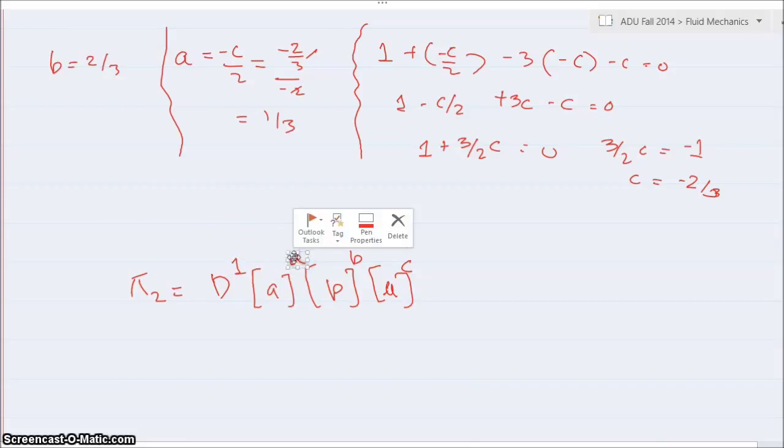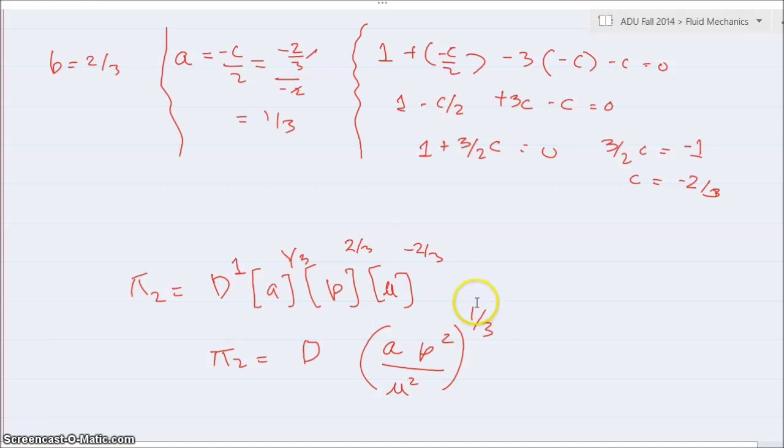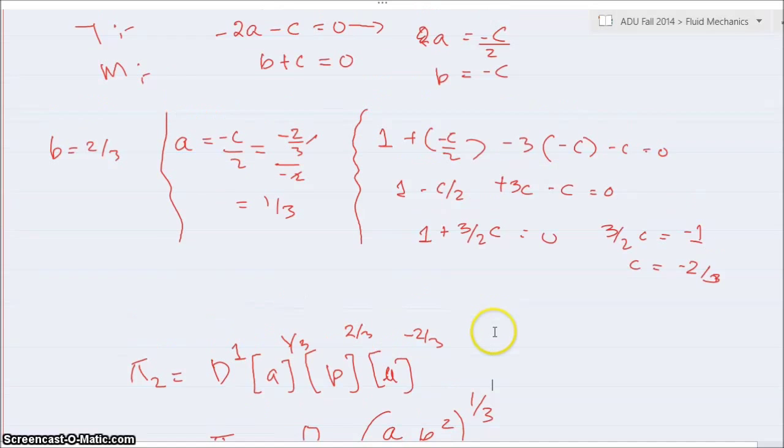Once again I'm going to copy this. So as we've done last time, let's put the value of a over here. a is 1 over 3, b is 2 over 3, minus 2 over 3. So we have the second pi is d, we have d, a to the 1 over 3, rho square over mu square.